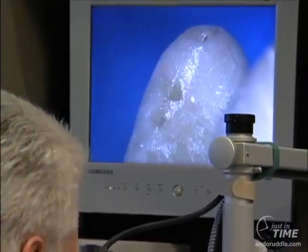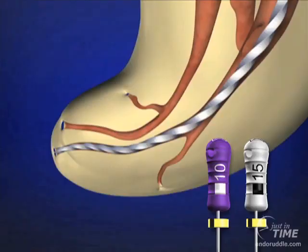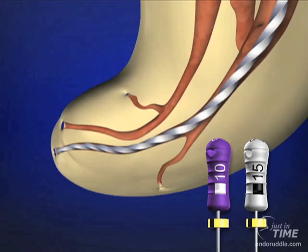Let's talk about how we would know as clinicians when we have an irregular glide path. The assumption is you have already negotiated the canal - you have a 15 file at length, a confirmed working length with either a working film or digital radiography, and you've established patency. You have a working length, an open patent canal apically, and the question is: can I use mechanical instruments to shape this region of the canal? After this presentation, you should never be in doubt again about when to finish the apical one-third with manual instrumentation versus when it is safe and predictable to use mechanical shaping instruments.